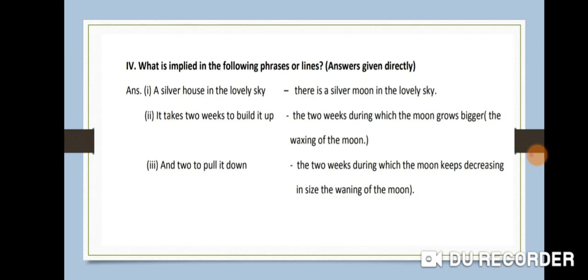See the next question: what is implied in the following phrases or lines? 'A silver house in the lovely sky' — silver house means the moon, not a house made by a man. 'It takes two weeks to build it up' — weeks means the phases of the moon, the waxing of the moon, from new moon to full moon, which takes two weeks or 15 days. 'Two to pull it down' means from full moon to new moon, which also takes 15 days or two weeks.